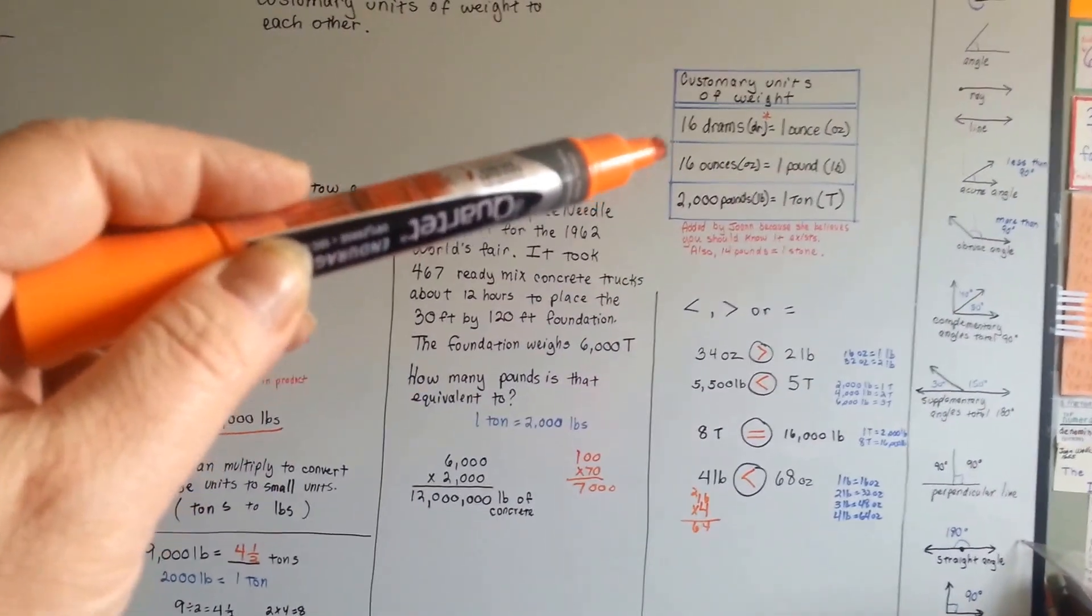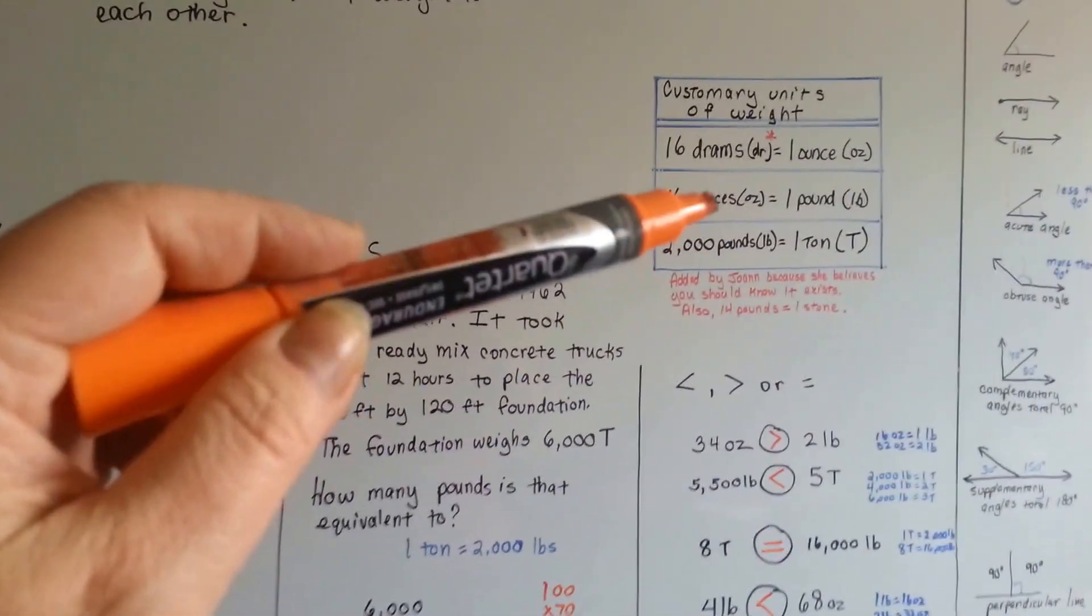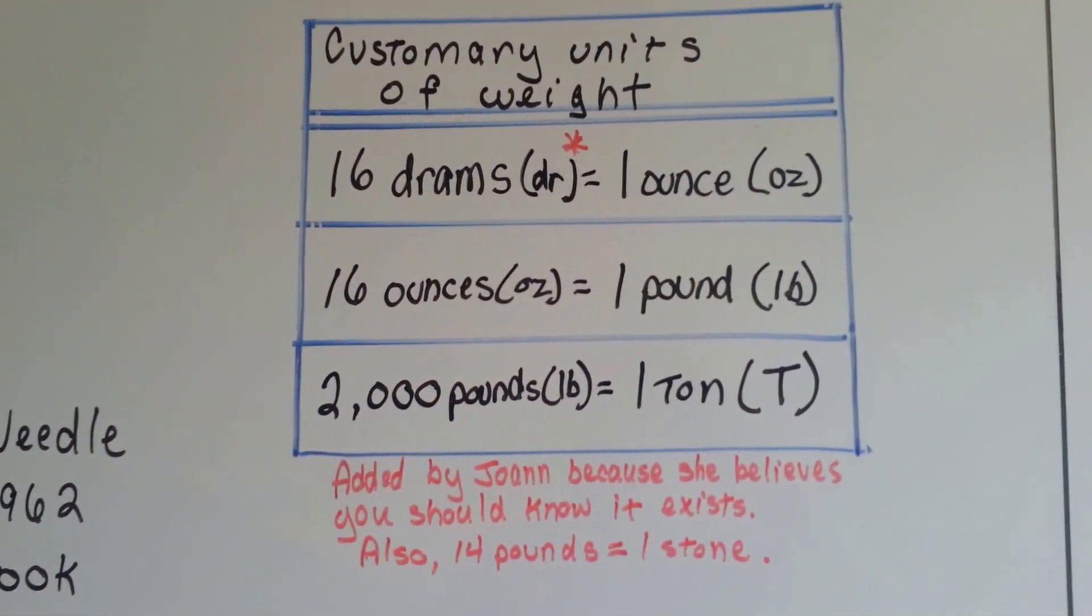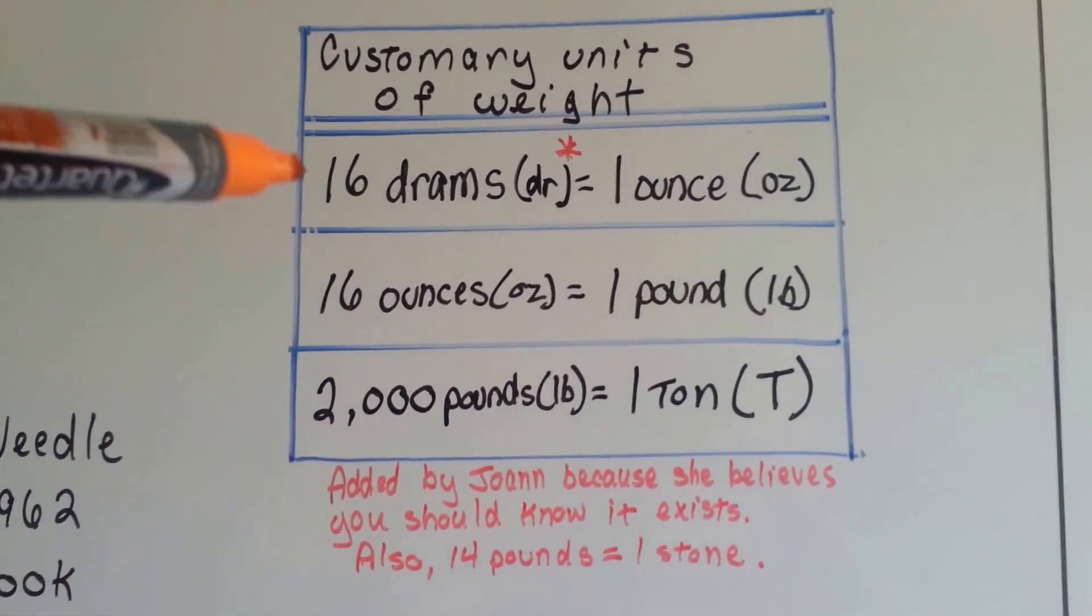So just remember, that 16 ounces is equal to 1 pound, and that 2,000 pounds is equal to 1 ton. But also,